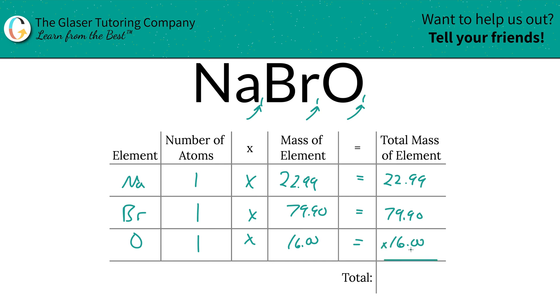That math was easy in this math. Don't multiply it. This math is going to be just as easy. Just simply add this column up to find the total mass of the compound. So this is 118.89.